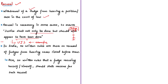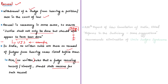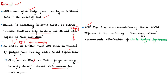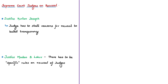In higher judiciary in India, there are no written rules on the recusal of judges from hearing cases listed before them. There are also no written rules requiring a judge to state reasons for the recusal. The 230th Law Commission Report recommends eliminating the uncle judges syndrome in the judiciary. This article presents opinions of some Supreme Court judges on the matter of recusal and reasons stated by judges who objected to demands to recuse themselves.